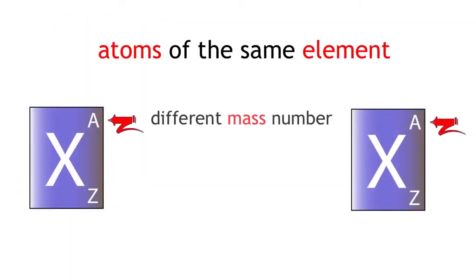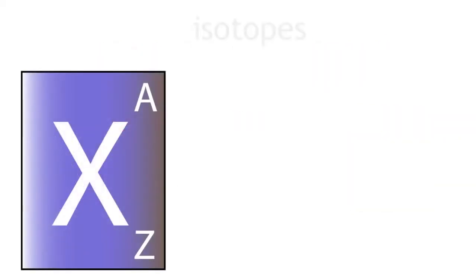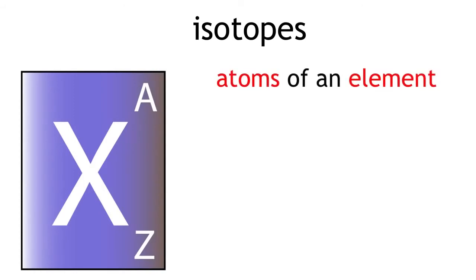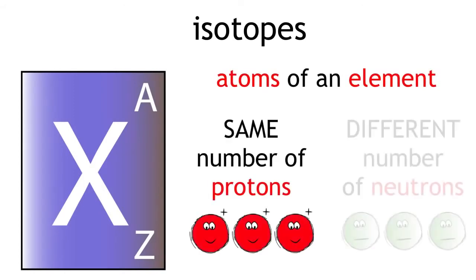Atoms of the same element with a different mass number are known as isotopes. They are defined as atoms of an element which have the same number of protons but a different number of neutrons.